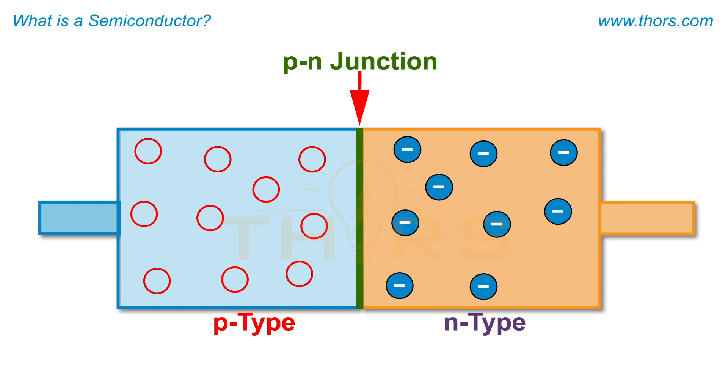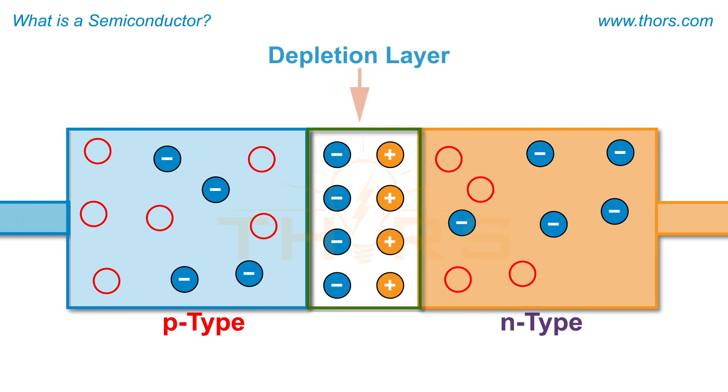At the p-n junction, the holes attract the electrons which move toward the p region. This creates a lack of free electrons and holes at the p-n junction, creating a depletion layer.